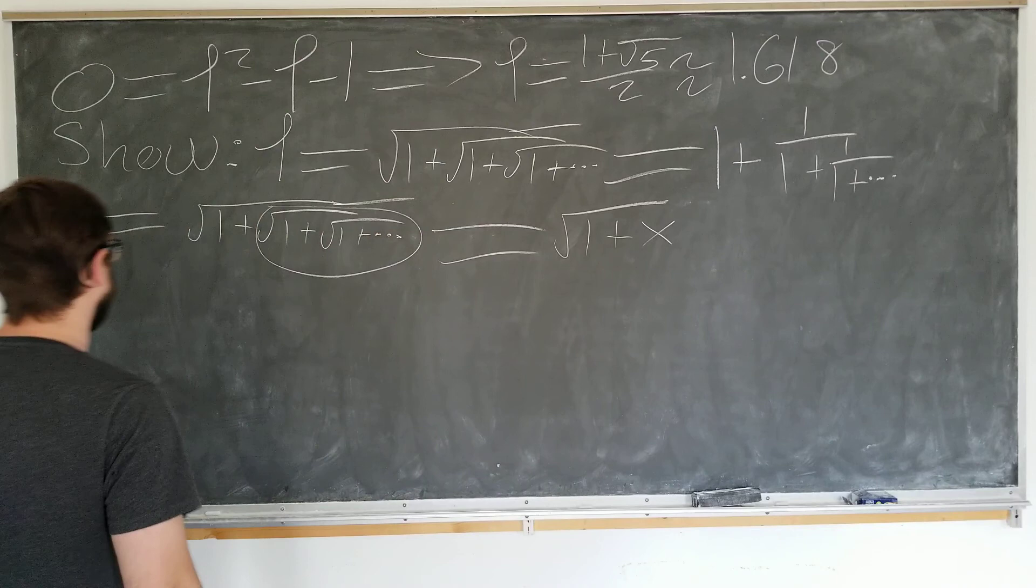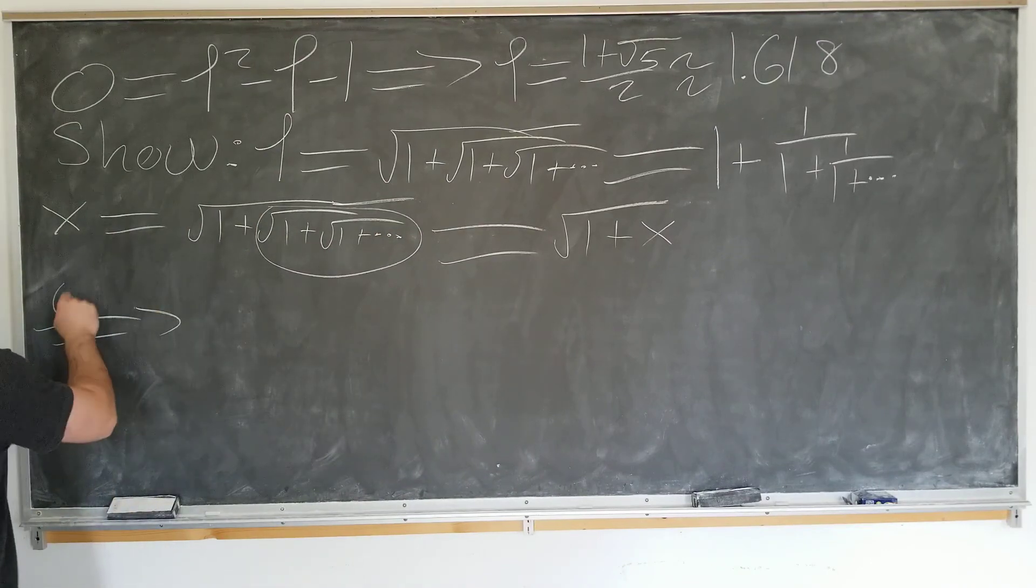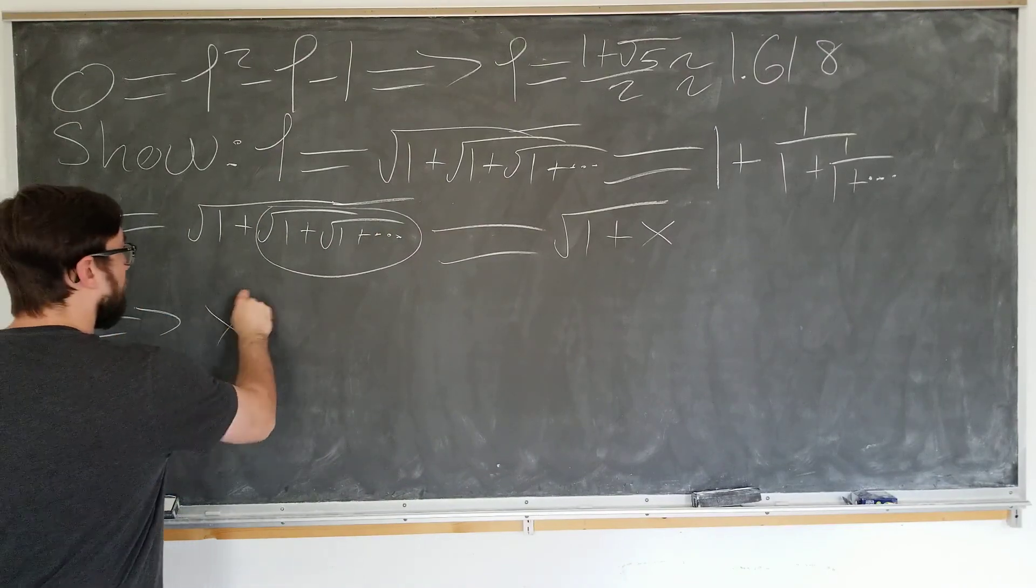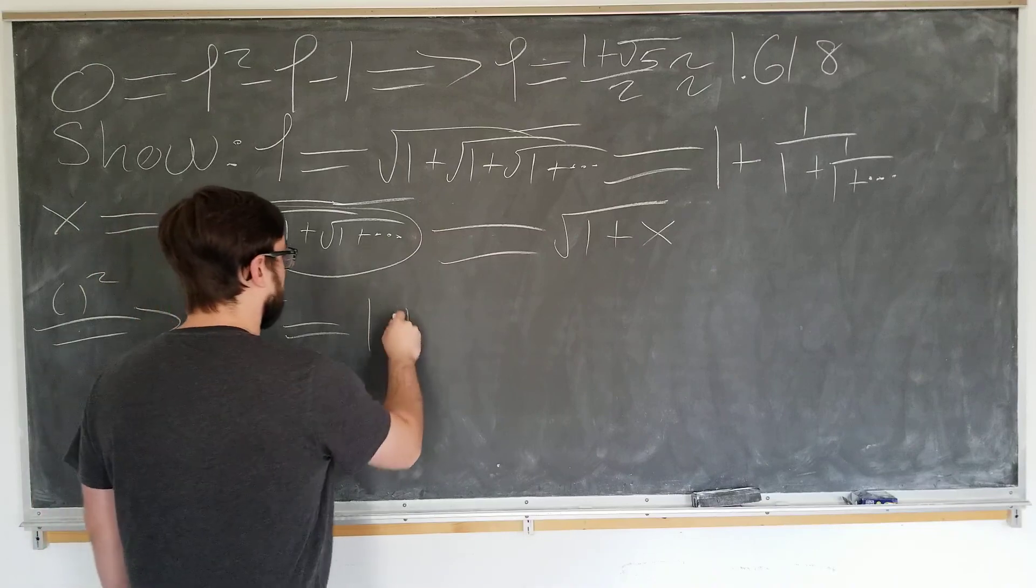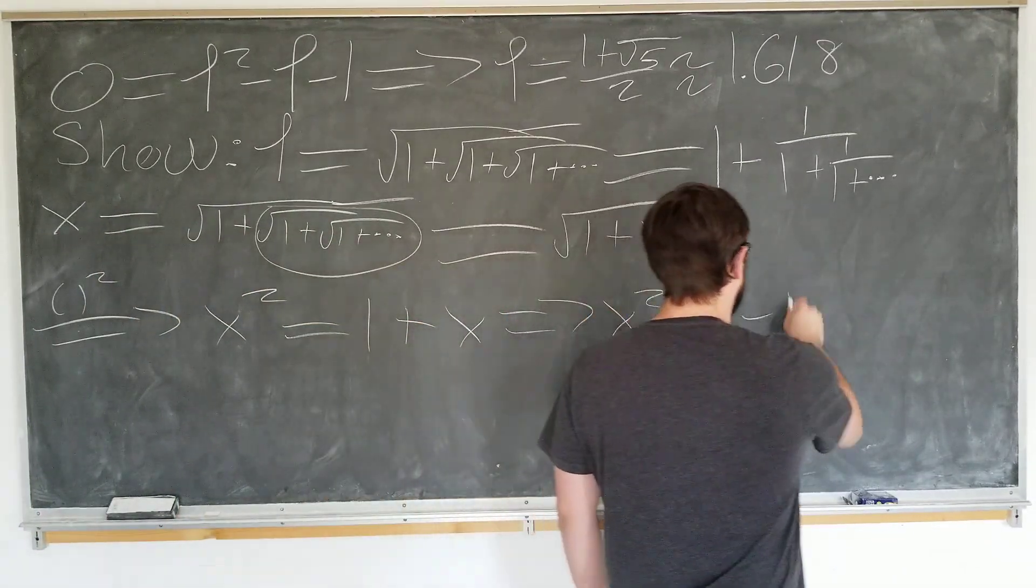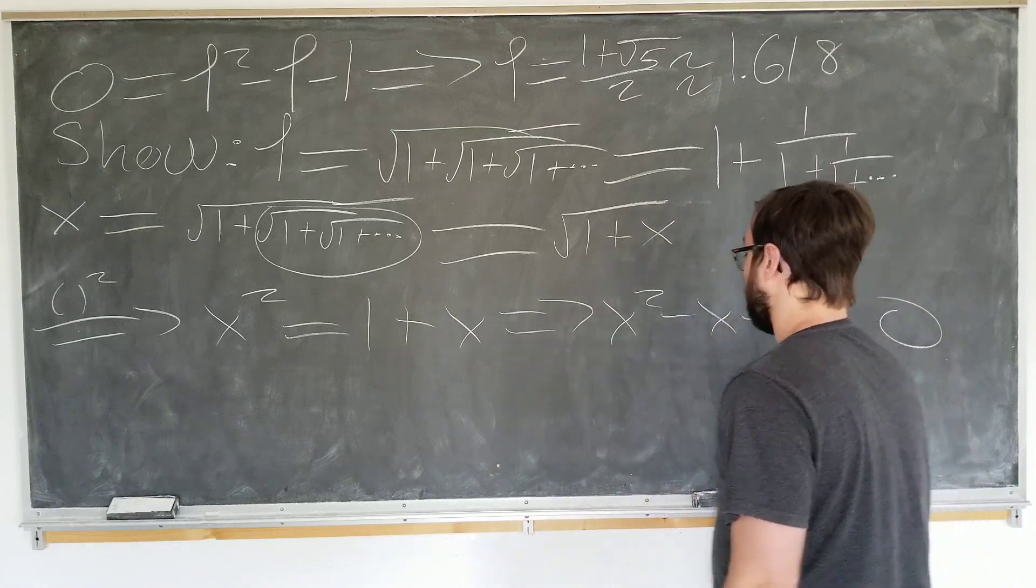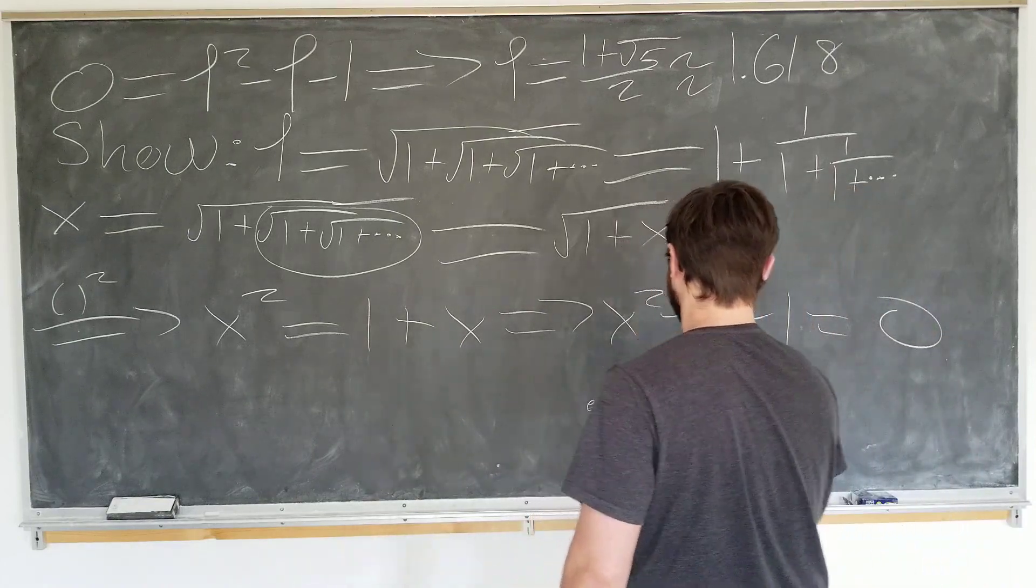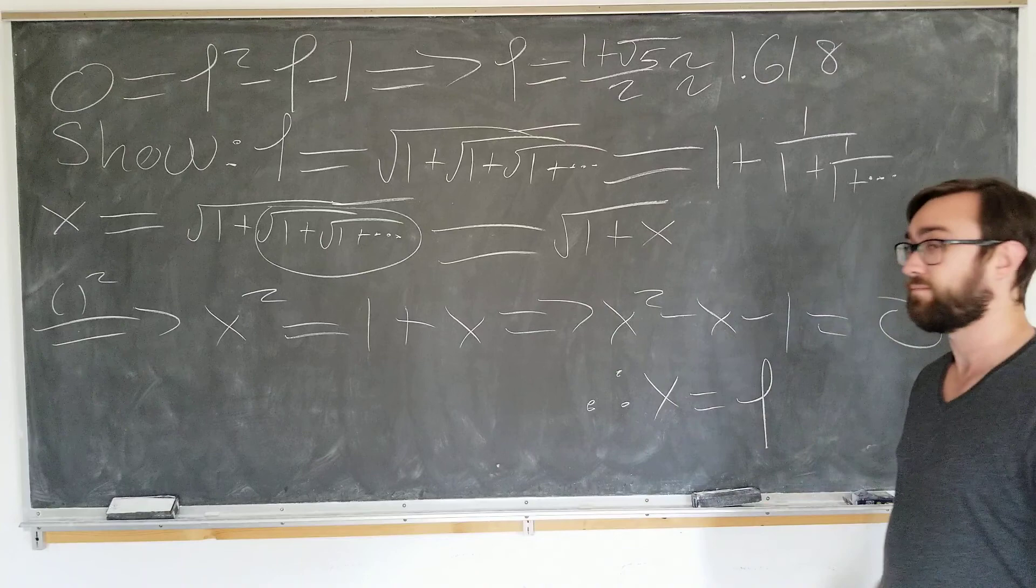We can then square both sides of this to obtain x squared equals 1 plus x, which obviously tells us x squared minus x minus 1 equal to 0. Or, it tells us x is the golden ratio of 5. Pretty cool!